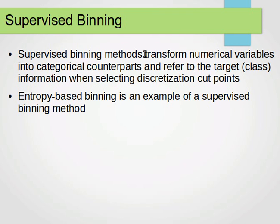Supervised binning methods transform numerical variables into categorical variables and refer to the target or class information when selecting discretization cut points. We need to select cut points to create groups or categories, and we do this by referring to the class. One example is entropy-based binning. Entropy is essentially a measure of uncertainty and is straightforward to compute.